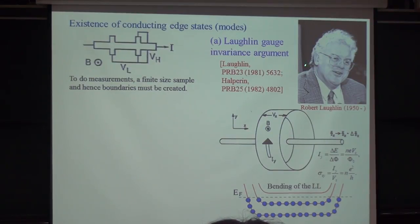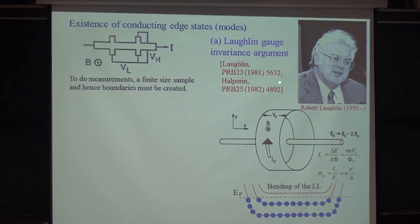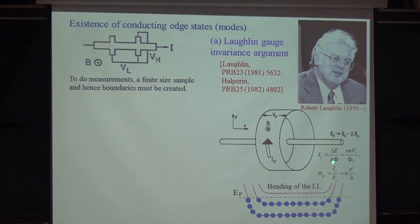This was first pointed out by Bob Laughlin in 1981, one year after von Klitzing found it. He used the so-called gauge invariance argument in a Gedanken experiment. He argued that because of gauge invariance, we have a current, and if you apply a flux that can only change by an integer number of the flux quantum phi-zero, then you have charge transport from one edge to another.